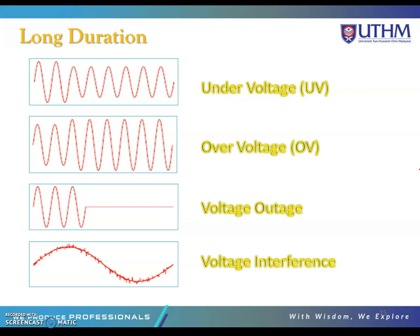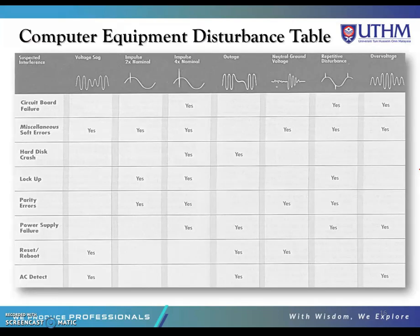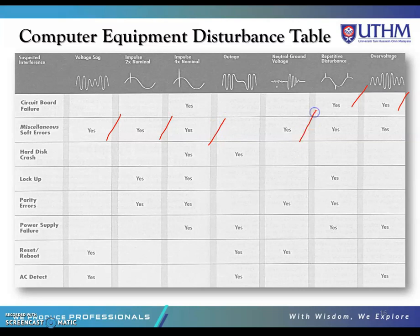For long duration events, we have undervoltage. The waveforms shown include overvoltage, voltage outage, and voltage interference. Looking at the computer equipment disturbance table, for example, circuit board failure is caused by repetitive disturbances and overvoltage. Miscellaneous errors are caused by voltage sag, impulse 2 times nominal, impulse 4 times nominal, neutral-to-ground voltage, repetitive disturbances, and overvoltage.